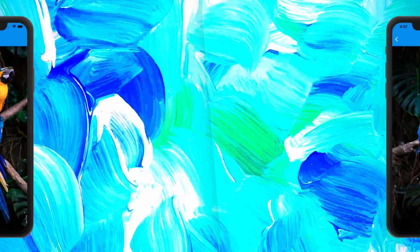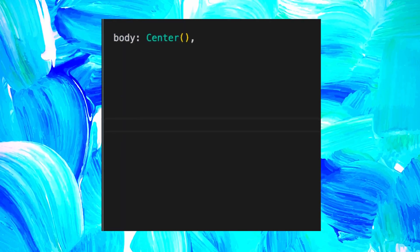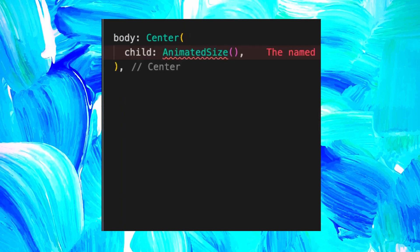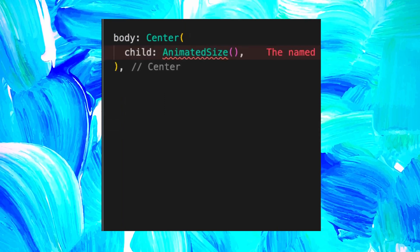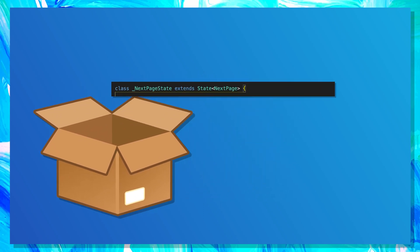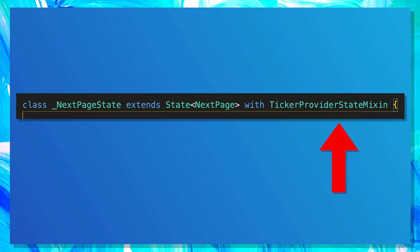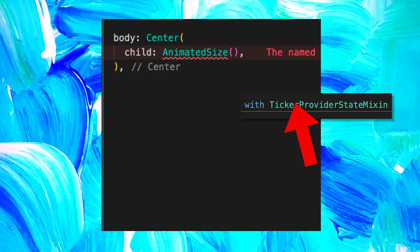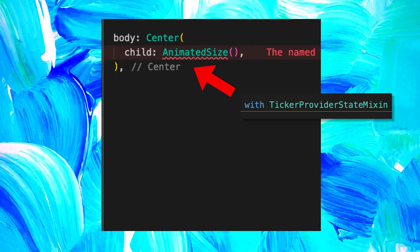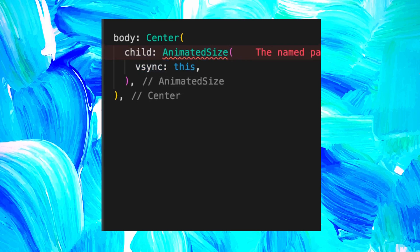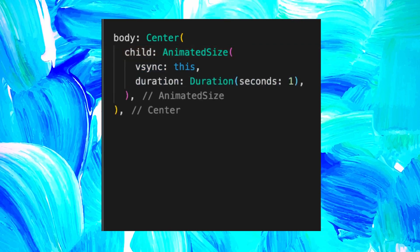I will show you how to do this with the code. Inside the center widget, you can add the AnimatedSize. You will need to make sure to add the TickerProviderStateMixin inside your class. Now you will be able to use the vSync this. After, we can use a duration of 1 second by example.